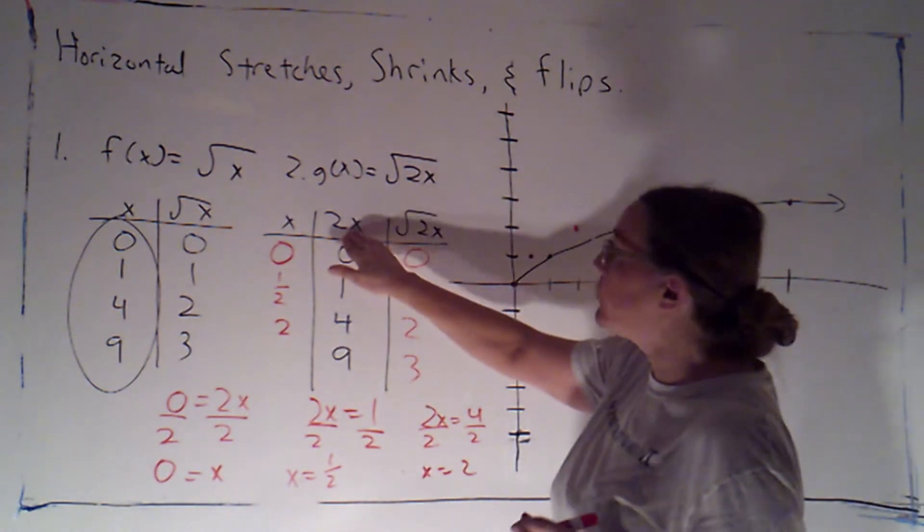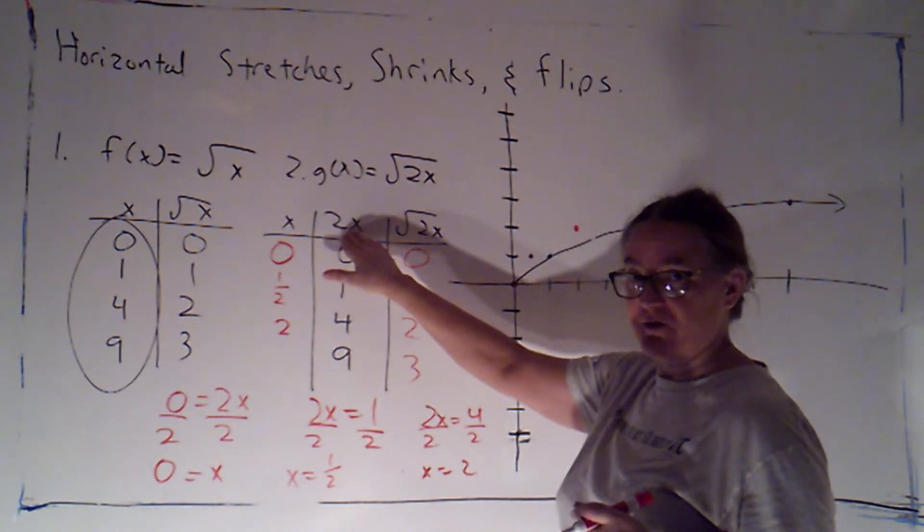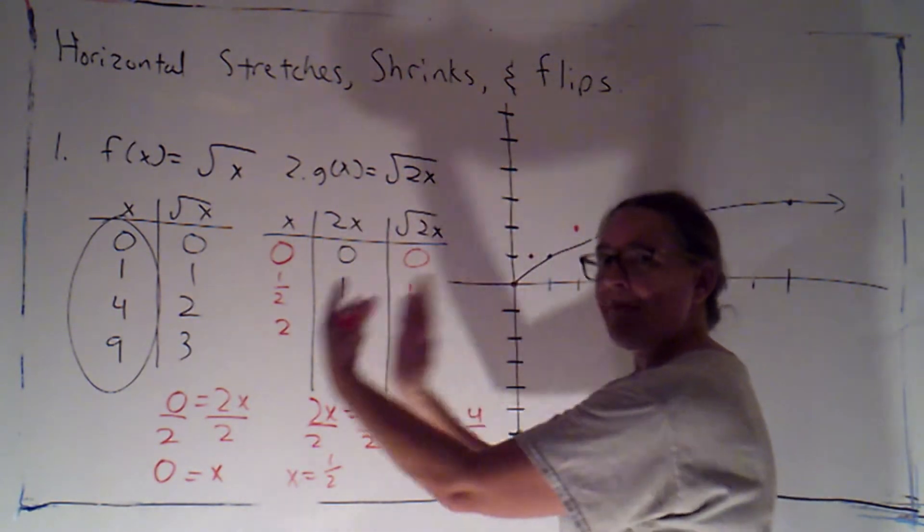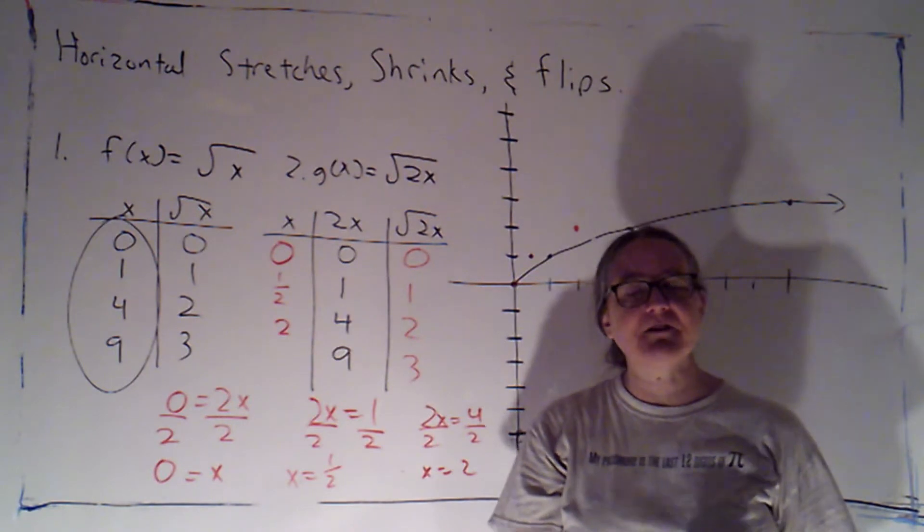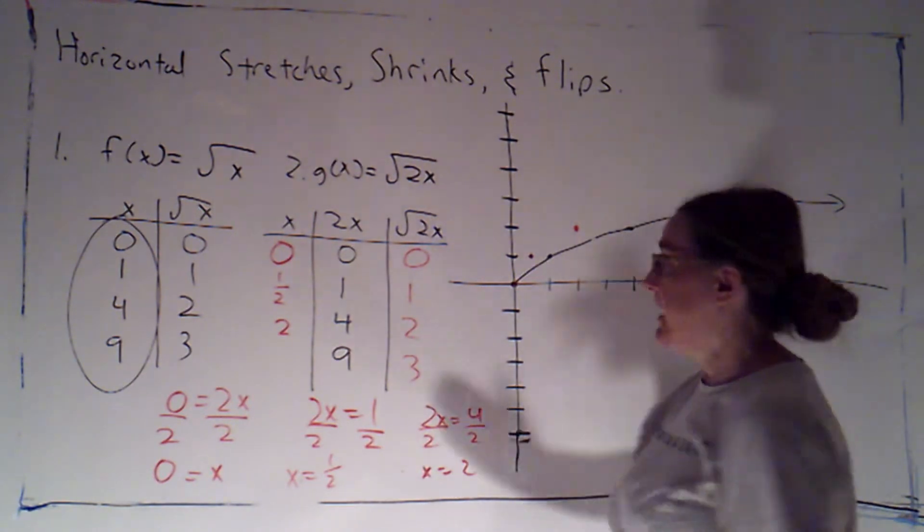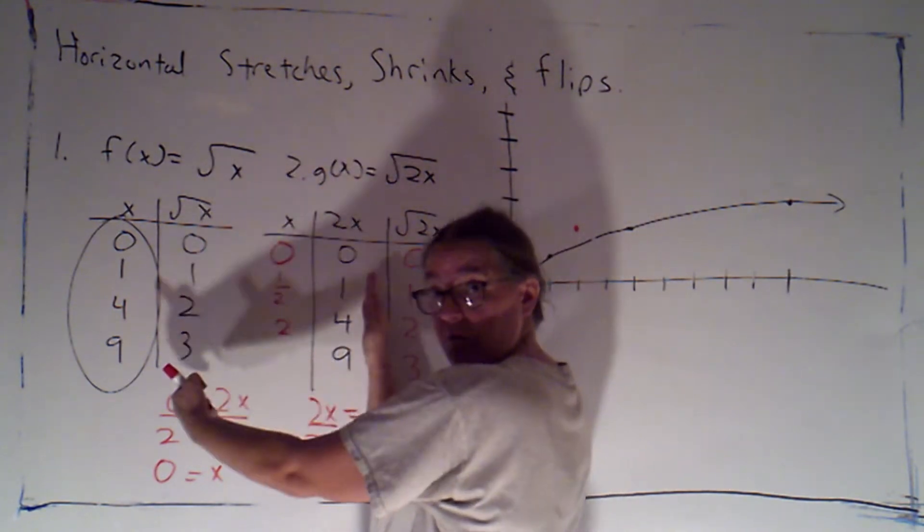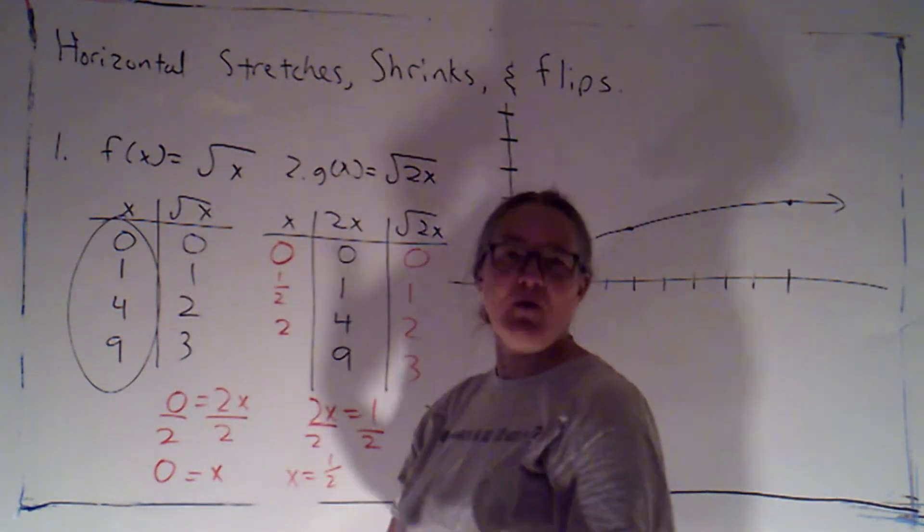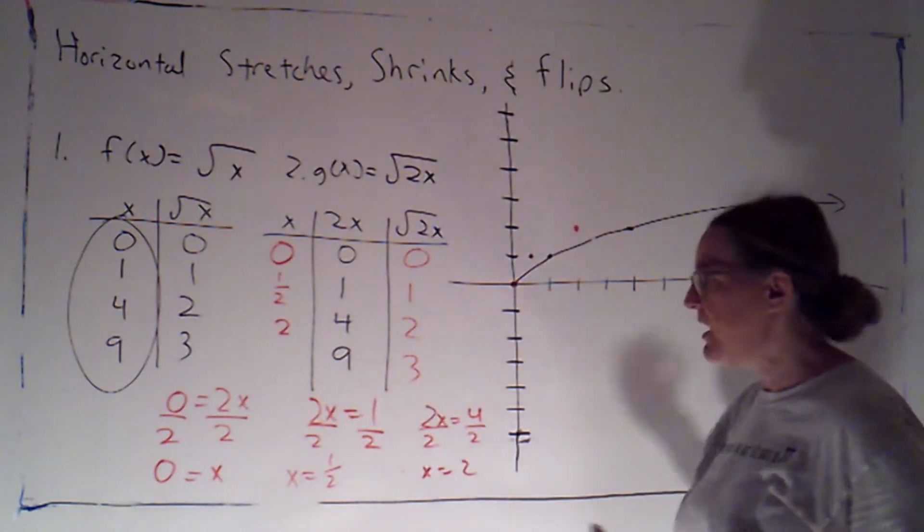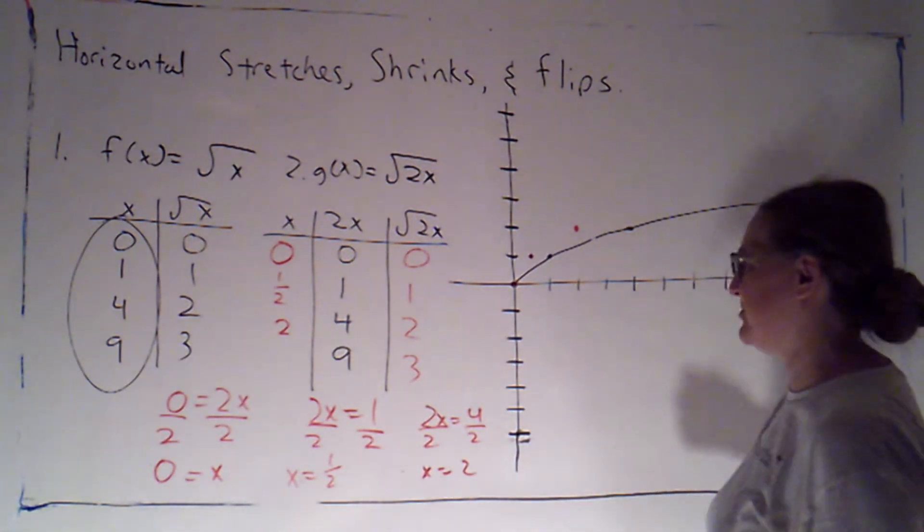Notice in the formula, we're doubling our x value, but the result is that my points are associated with x values that are half as big. And the reason is because we have to work backwards. If we know what 2x is and we want to know what x is, we're undoing the multiplication by 2, which means we're doing the opposite. We're dividing by 2.